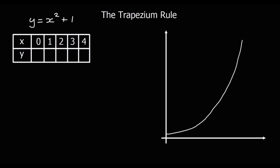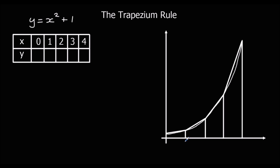This video is about the trapezium rule. The trapezium rule is a way of estimating the area under the graph by splitting it up into trapeziums. I've got a graph here and I'm going to show you how it works before we move on to the question.